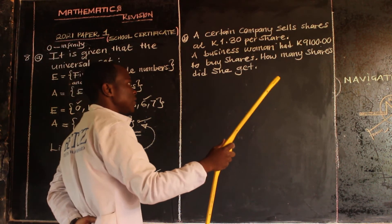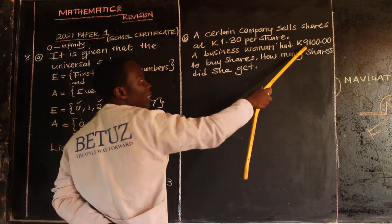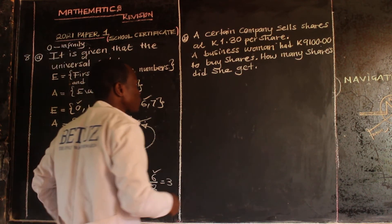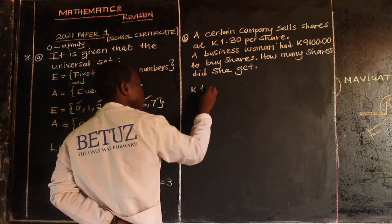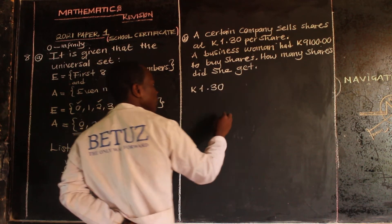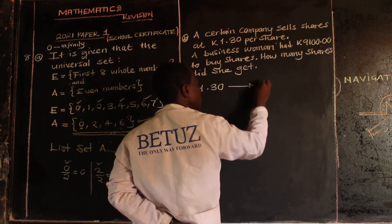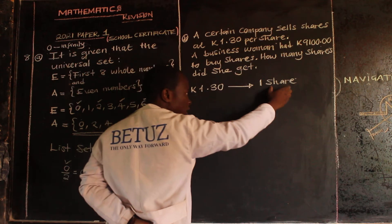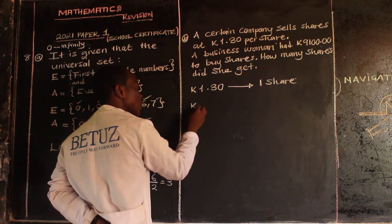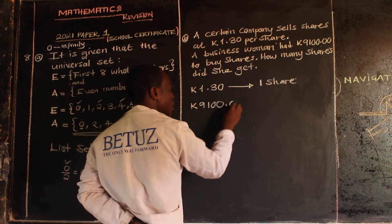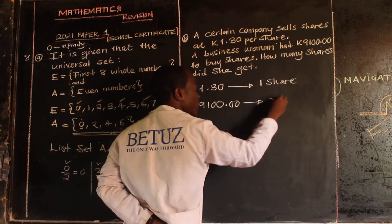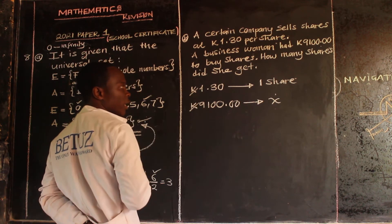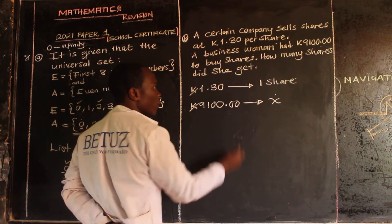This is very simple. We are going to use proportions. We know that 1.30 is equivalent to one share. Now, 9,100 is equal to x — we don't know the number of shares. We are going to use cross multiplication.